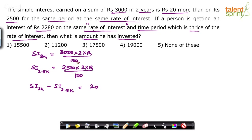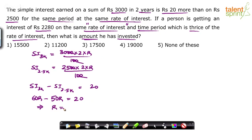Now substitute the values. The zeros cancel, so you get 60R minus 50R equals 20, which means 10R equals 20, so R equals 2. We have found the rate of interest — 2% per annum.